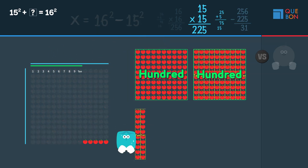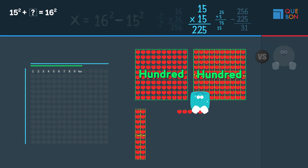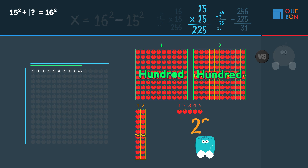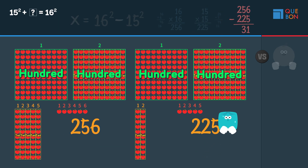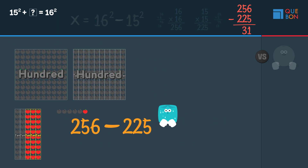Sweaty does the same with 15 squared and ends up with two hundreds, two tens, and five ones — two hundred and twenty-five unit squares. To calculate the difference, Sweaty puts the two squares next to each other and compares.